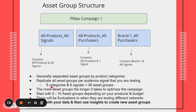For example, if you have six different product categories like football, baseball, and basketball, and signals of people interested in summer sports or people similar to past converters, you would test each signal against each product category — which would equal 36 asset groups. You do this to test what's actually going to hit on the product categories. You'll be able to review the data within a few weeks and see what to optimize, where to scale, or where to pull back. You can start with five to ten depending on your budget, industry, and how many product categories you have.